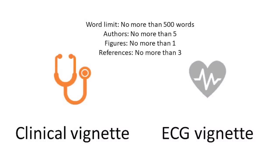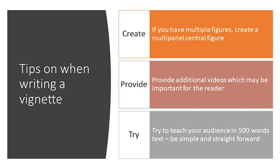A clinical vignette or ECG vignette has a word count of no more than 500 words — a very brief manuscript — with no more than five authors, only one figure, and no more than three references. These are quick hits with either a clinical vignette or a fascinating, interesting ECG with which you wish to make a clinical point. It's important to have high-quality imaging, and if you have multiple figures, consider creating a multi-panel central figure. Provide additional videos if important for the reader, and aim to teach your audience — in 500 words, be simple and straightforward.